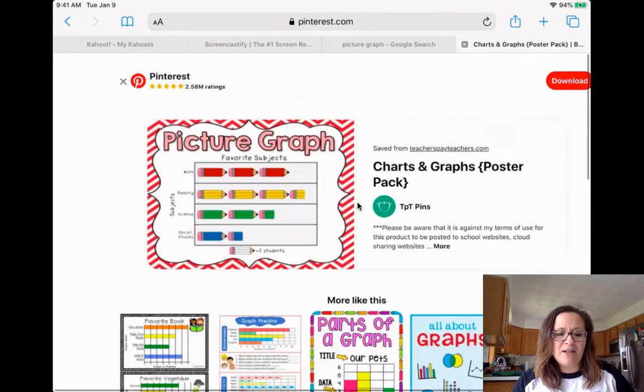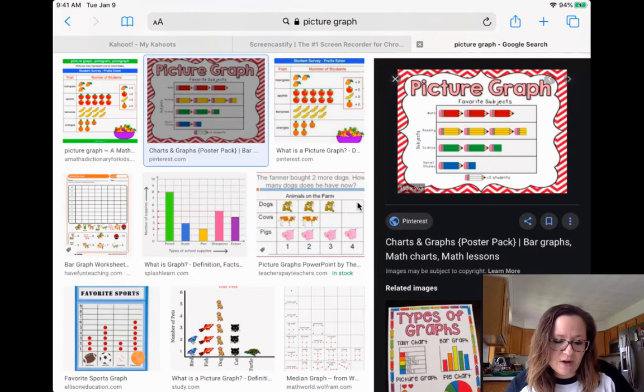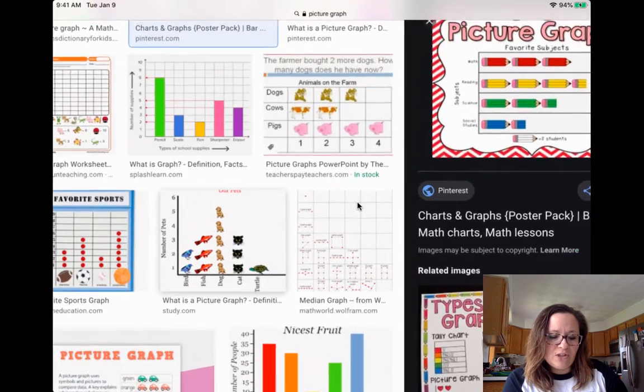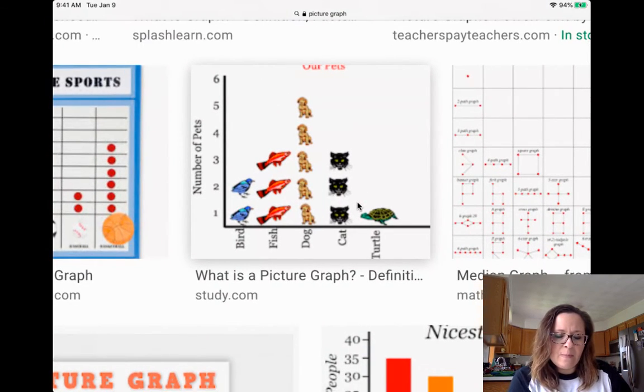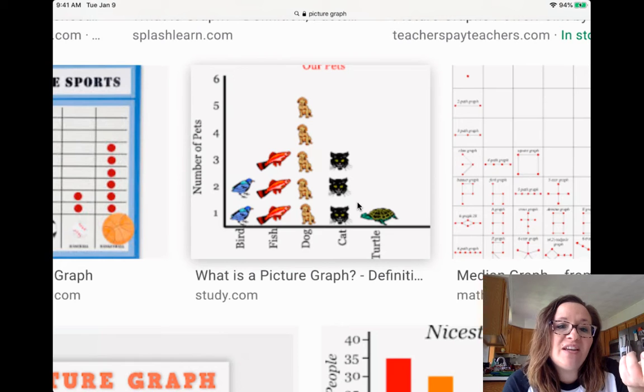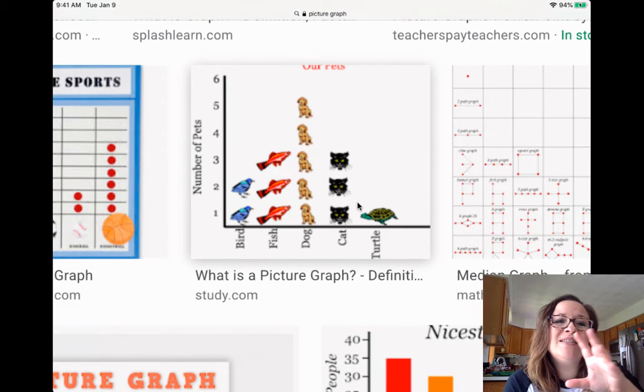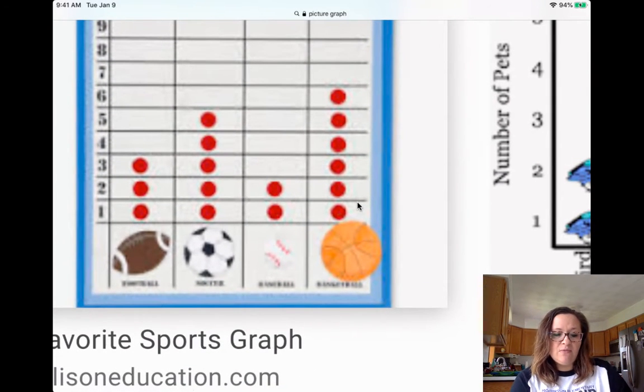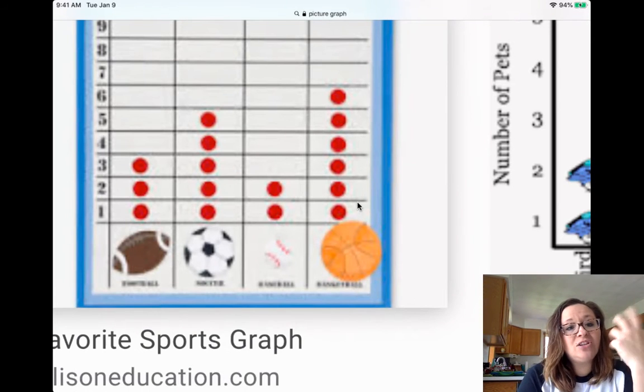So one of the really important things when you're looking at a graph is to always see if there's a key. If there is a key, you have to know how many one symbol is worth. You can use whatever you want for a picture graph, which makes it fun. It's like a bar graph, only they use pictures. Now I'm looking at some of these and they use different pictures. You have to pick a symbol that's the same size. So you can really see on your picture graph.